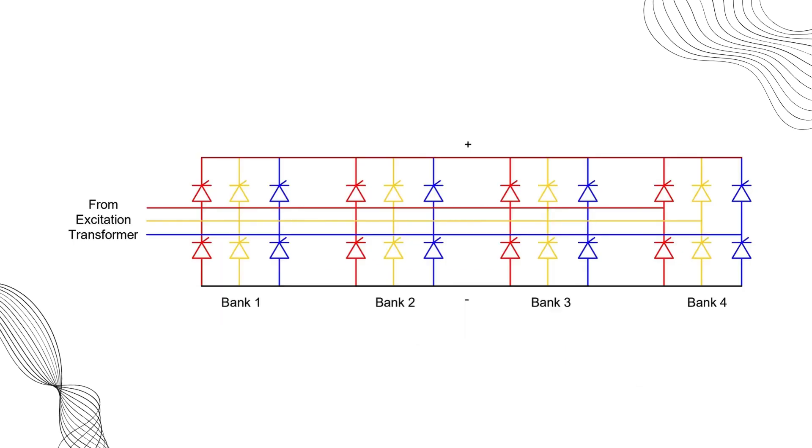contains four thyristor banks. By controlling the firing angle of these thyristors, we can adjust the output voltage of the AVR. What's interesting is that these thyristor banks work on an N-1 principle. So even if one bank fails, the system continues to operate at full capacity using the remaining three banks. However, if more than one bank fails, the generator load must be reduced.